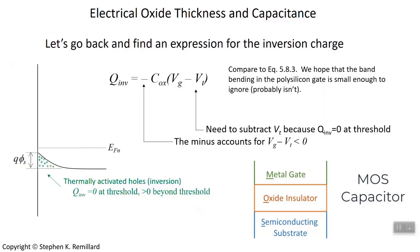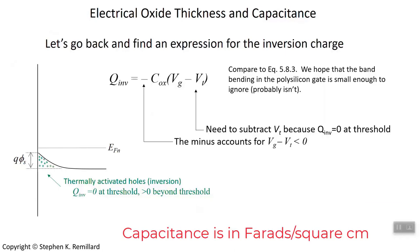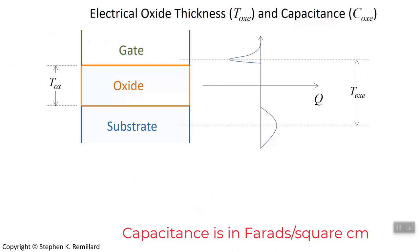Typically, Q inversion is coulombs per square centimeter, and oxide capacitance is typically in farads per square centimeter. There is an unusual notation. You'll see it all over the place in the textbook, this T sub OXE and this C sub OXE.